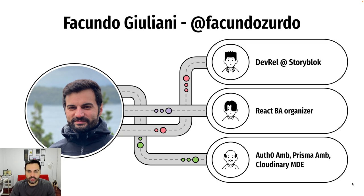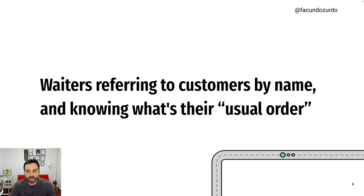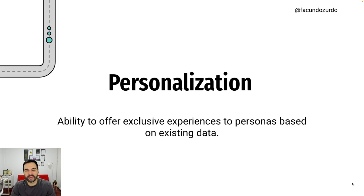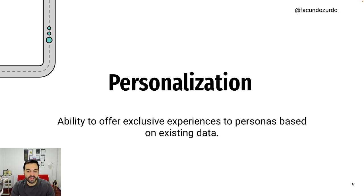So let's jump into the talk. Has it happened to you that you go to a coffee shop and the waiter refers to you by your name, or the waiter already knows your usual order? Or probably you went to your local brewery or your local bar, and the person at the bar is already recommending you a beer based on previous orders at that same bar. If that happened to you, then you were experiencing what we call personalization, which is basically the ability to offer exclusive offers and experiences to personas based on existing data.